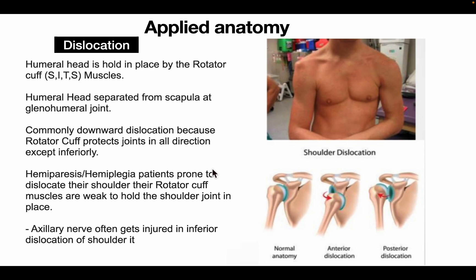Applied anatomy — Dislocation: The humeral head is held in place by the rotator cuff muscles (SITS: subscapularis, supraspinatus, infraspinatus, teres minor). During dislocation, the humeral head separates from the scapula at the glenohumeral joint. Dislocation commonly occurs downward because the rotator cuff protects the joint in all directions except inferiorly. In hemiplegic patients, shoulder dislocation is more prone because the rotator cuff muscles are weak. The axillary nerve is most commonly damaged in inferior dislocation of the shoulder joint.